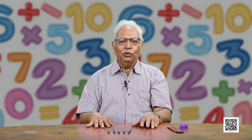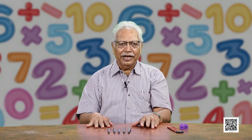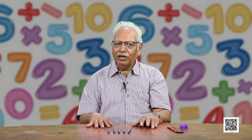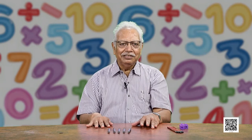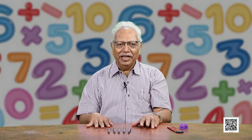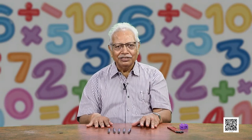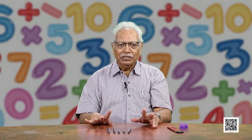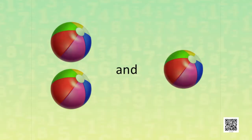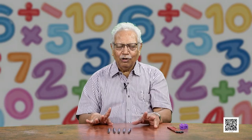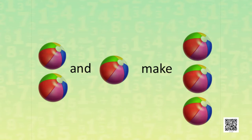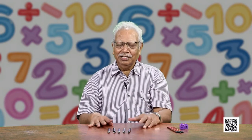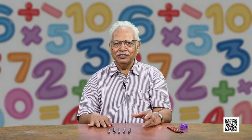Let us go further and now look at some pictures to see how we can add objects which are in the pictures. 1 ball and another ball — how many do they make? By now you know. They make 2 balls. Similarly, if two balls are there and we add one more ball to it, how many does it become? 2 and 1 make 3. Now you can easily recall — you have learnt from pens and pencils and all.